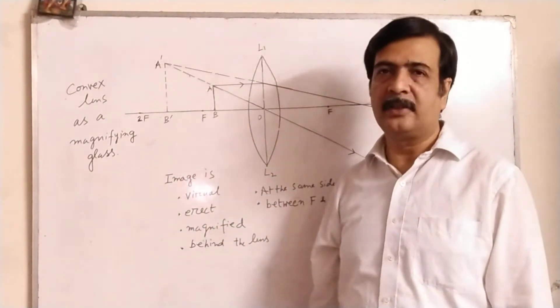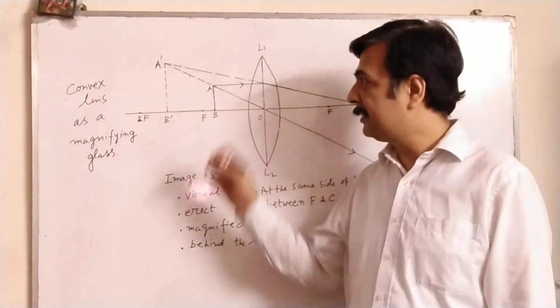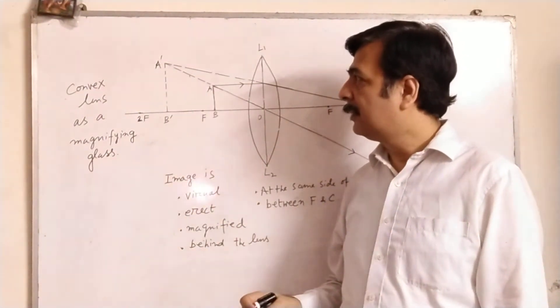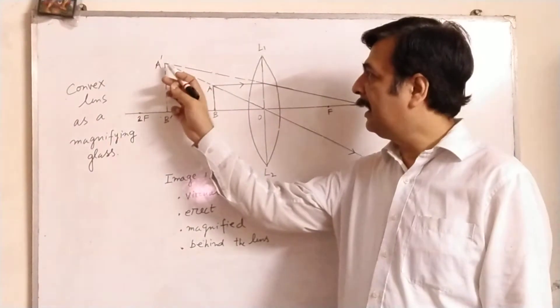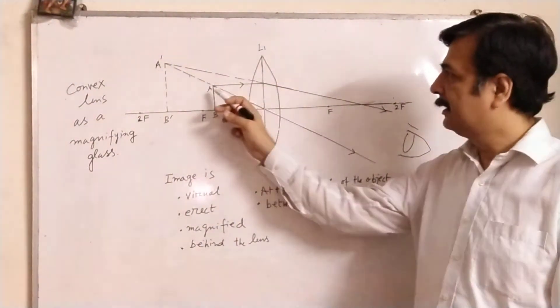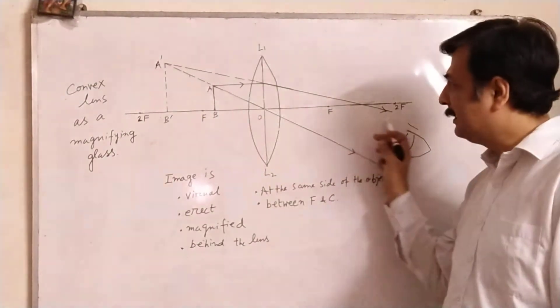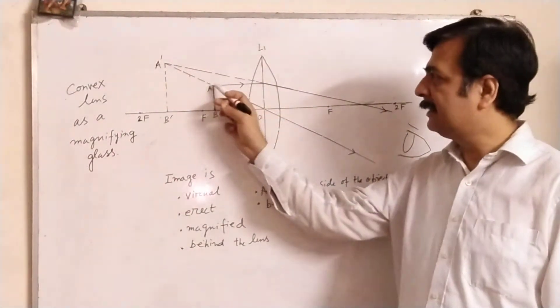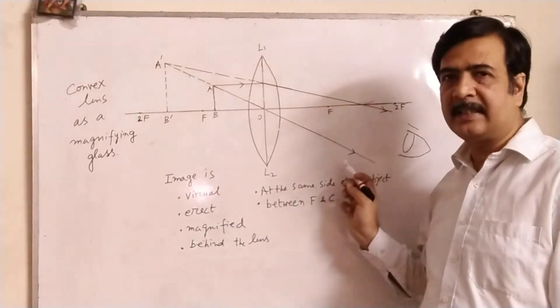Between these two, the object is placed. The object is A B upright. Now one ray is refracted in this way, here, and then it is refracted. Another ray is passing through the optical center straight.